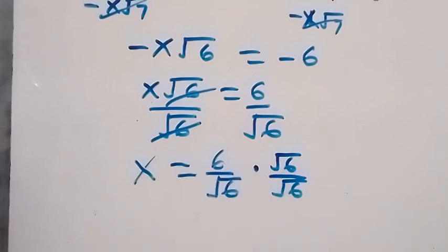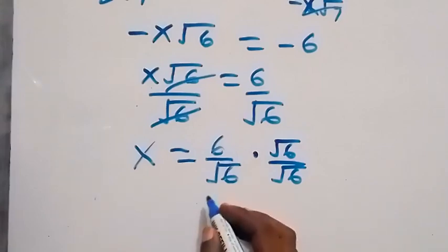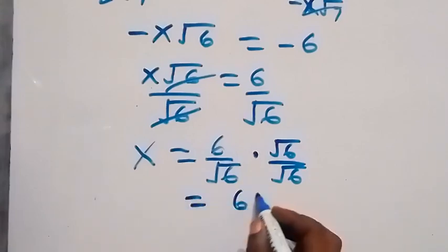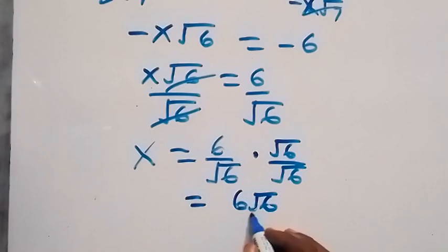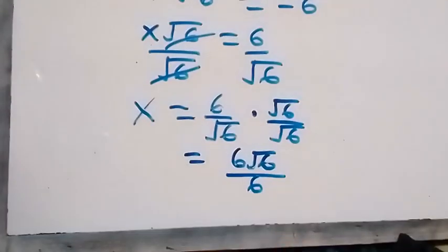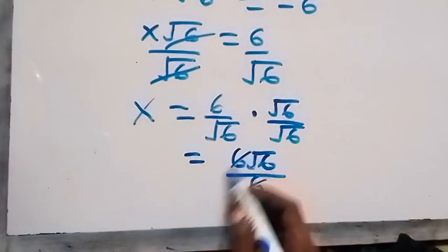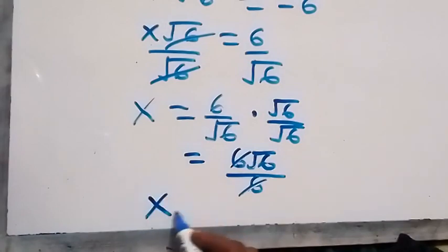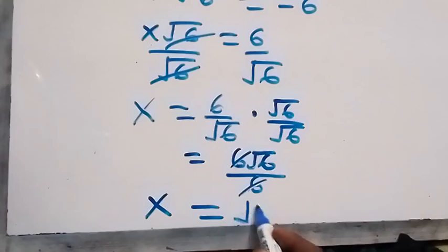And this we multiply straight, so this will be equal to 6 root 6 over root 6. And from here, this 6 will cancel each other, that means x will now be equal to root 6. So here, the value of x in this problem equals to root 6.